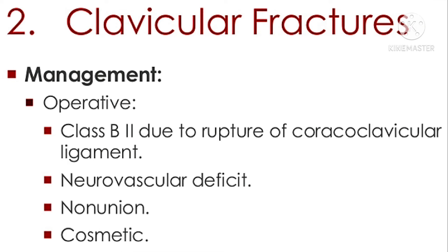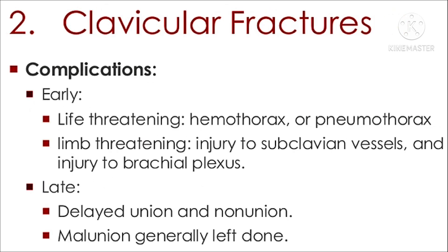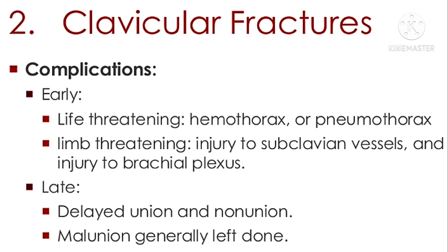Operative indications: Class B2 due to rupture of coracoclavicular ligament, neurovascular deficit, nonunion, and cosmetic concerns. Complications — early: life-threatening hemothorax or pneumothorax; limb-threatening injuries to the subclavian vessel and brachial plexus. Late: delayed union and nonunion, malunion generally left alone.